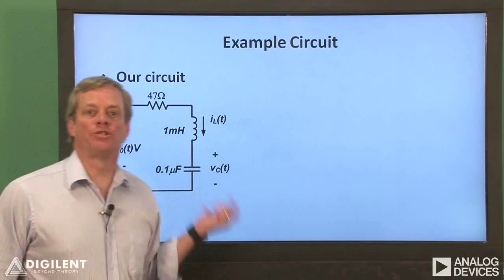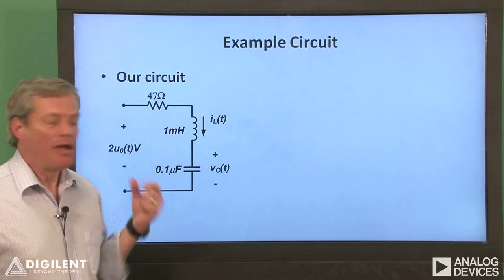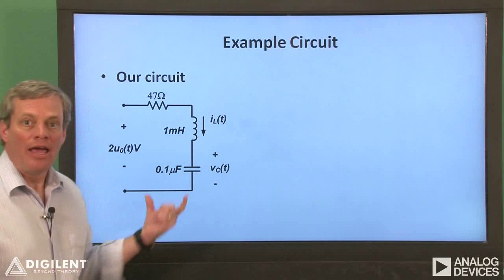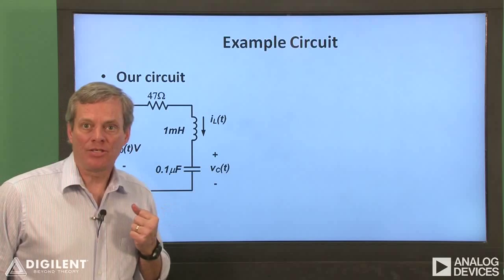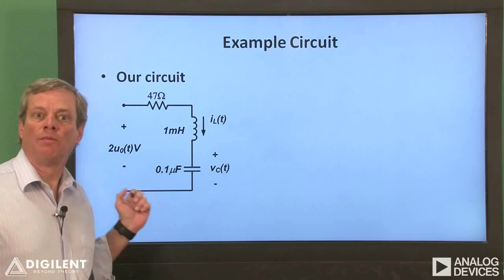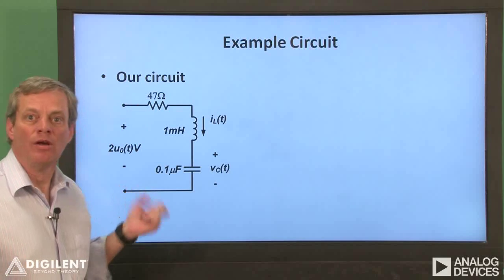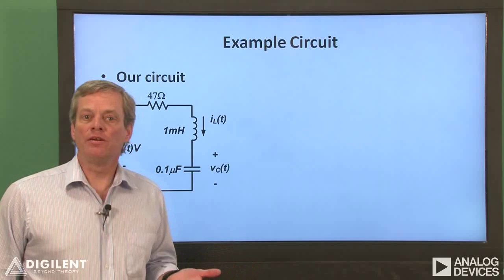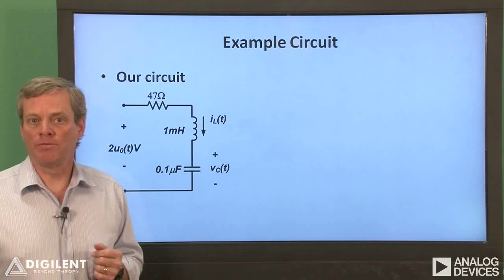Here's our physical circuit. We'll use a 47 ohm resistor, a 1 millihenry inductor, and a 0.1 microfarad capacitor. The waveform generator will apply a 2 volt square wave, with a low enough frequency to appear to be a step function for all intents and purposes.